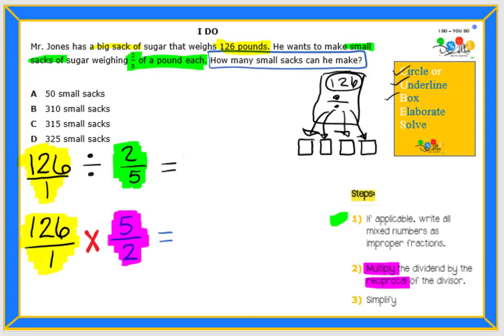So now we are going to multiply across. 126 times five. I might need a little bit of space for that. I'll use my space up here. It's okay. Six times five is 30. Carry the three. Two times five is 10, plus three more is 13. Carry the one. One times five is five, plus one more is six. So we get 630. See how we just multiplied right across? And now we're going to multiply the denominators right across. One times two is two.